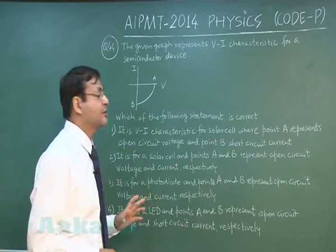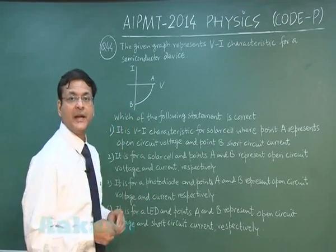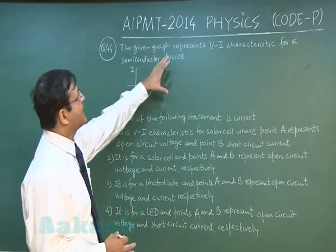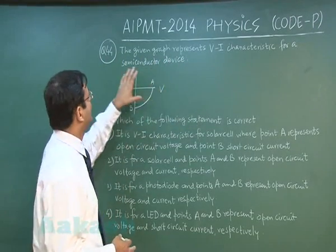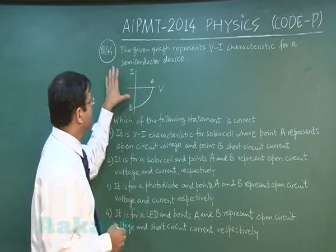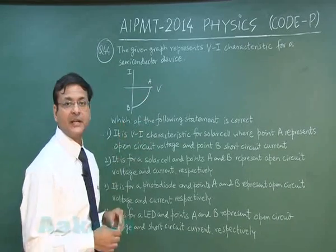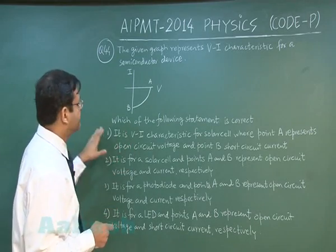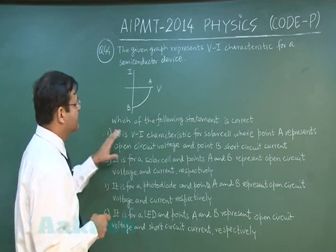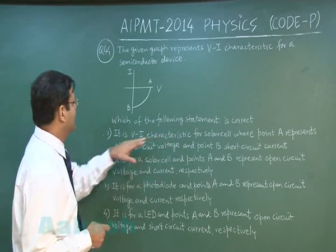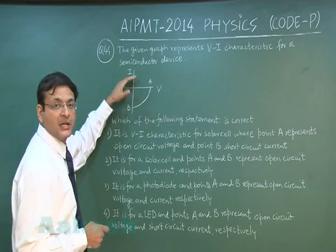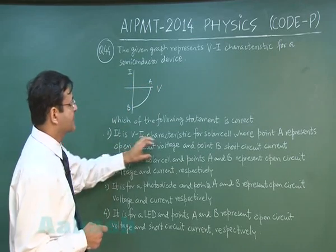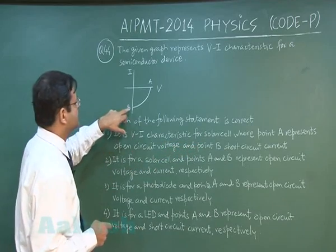Now in this question 44 which is a straight forward NCERT based question which is a fact based thing, the given graph represents VI characteristic for a semiconductor device. You see IV graph in 4th quadrant, this is for solar cell you can clearly see in the text. And this is true for the first option which has been given here, it is VI characteristic for solar cell.